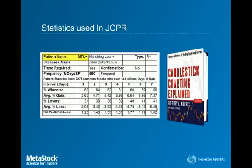Here we've got the pattern name, MTL plus. The plus indicates that this is a bullish pattern; a minus would be indicative of a bearish pattern. Under type I've got R plus — R stands for reversal, plus stands for bullish — making this a bullish reversal pattern. The trend requirement indicates that a specific trend is required. In this case, a bullish trend would be required to take advantage of this bullish pattern. Confirmation indicates that we would want a technical confirmation of that particular pattern; in this case, no confirmation is required.